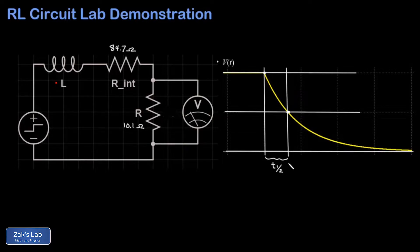Once we have the half-life, we simply plug into the half-life formula: t₁/₂ is L over R times the natural log of 2, and the R there is the total resistance of the circuit. We then solve this for L and we've got our experimental value of the inductance.